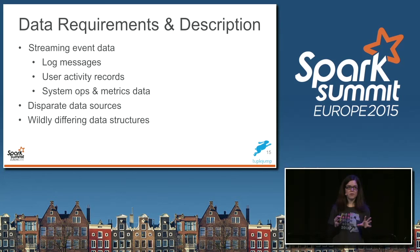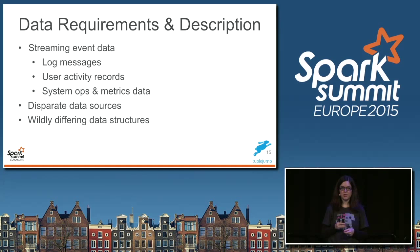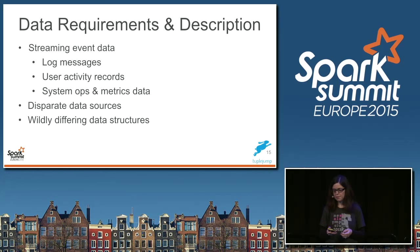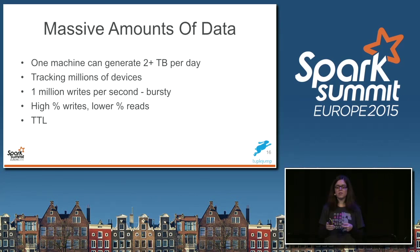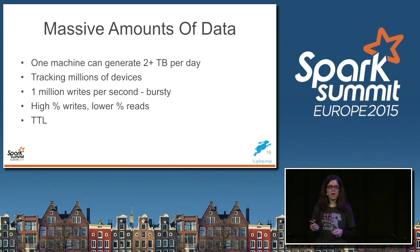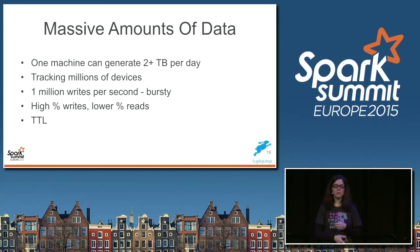What does that data look like? It's usually log event data, user activity records, system operations, and metrics. Many disparate data sources with wildly differing data structures. If you think about an agent distributed on every machine — workstations or servers — one machine can generate over two terabytes of data per day. When you're tracking millions of devices, you've got a million writes per second. Oftentimes that traffic is very bursty, with a high percentage of writes and a smaller percentage of reads or vice versa, and you have to handle both situations.